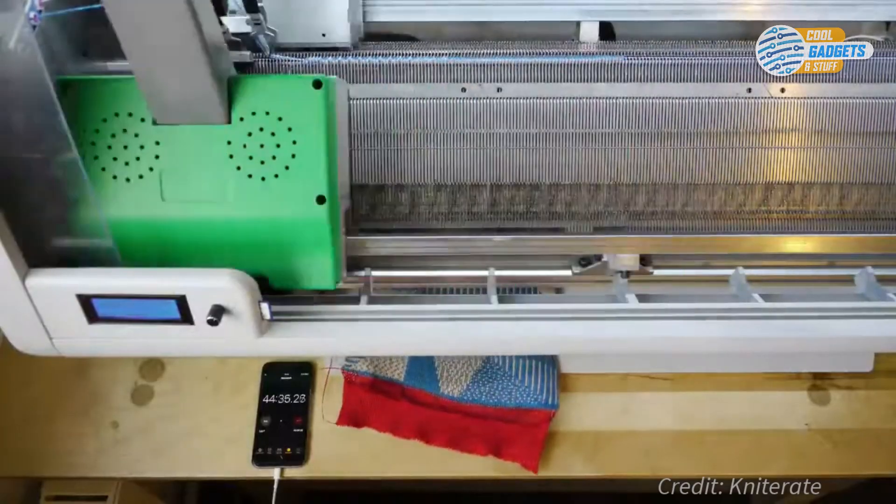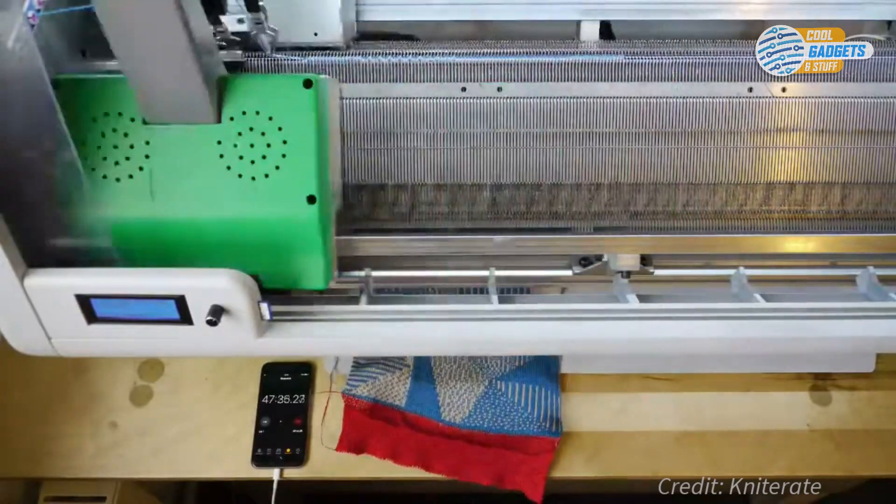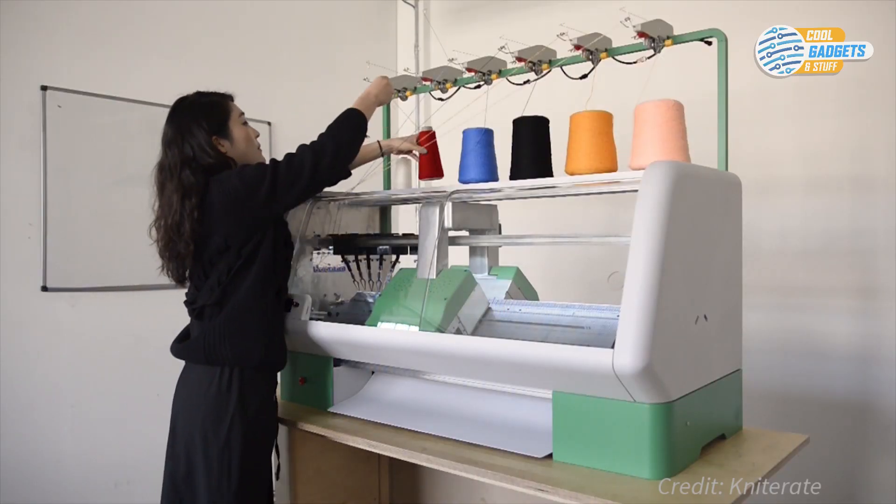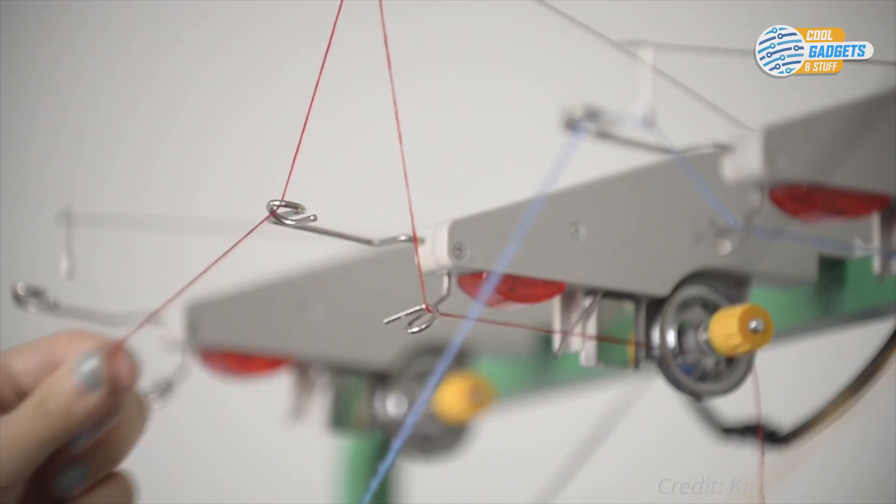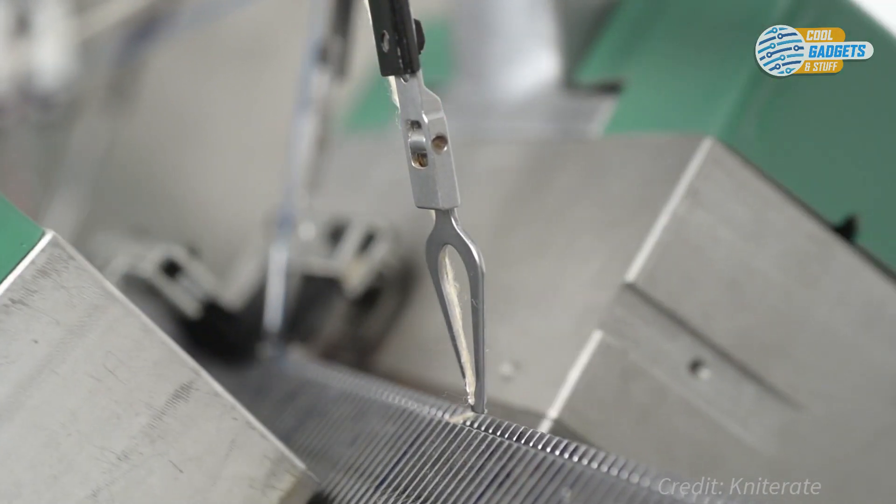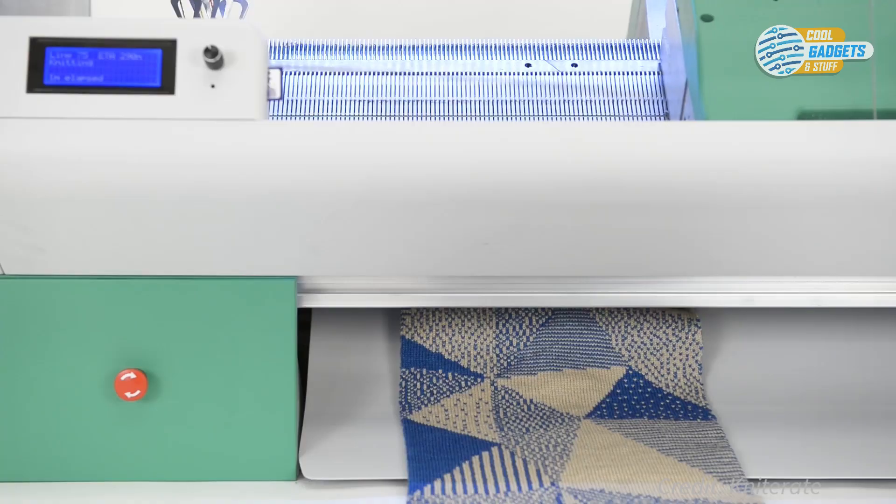Knitter8 has hundreds of computer controlled needles that create loops which combined create knitwear. With up to six yarn feeders that are compatible with any yarn and equipped with sensors for yarn breakage and delivering six different colors, the machine can make amazing patterns, structures, and shapes.